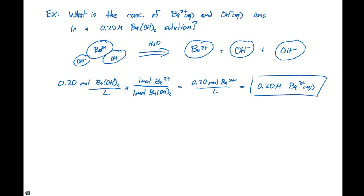This might not look like a difficult calculation, but there's significance when we look at the hydroxide. If we have 0.20 moles of barium hydroxide per liter, for every one mole of Ba(OH)₂, there are two moles of OH⁻.